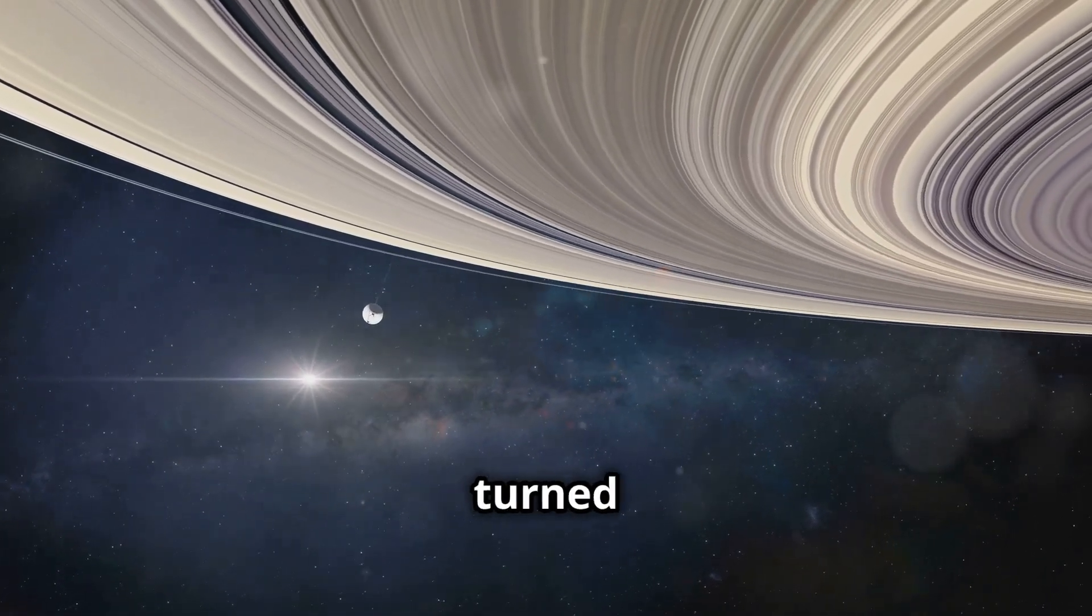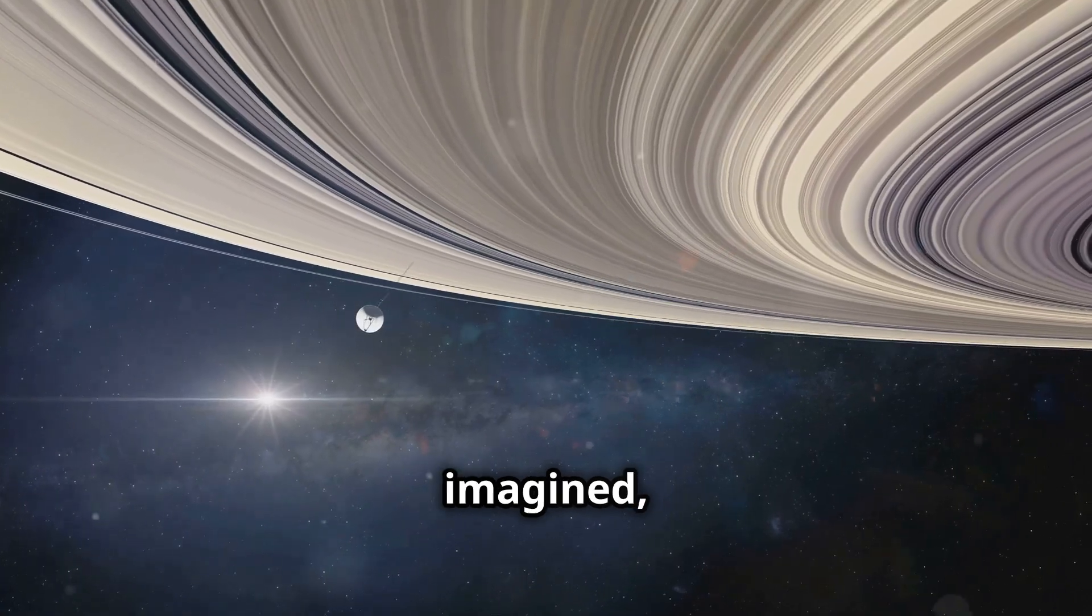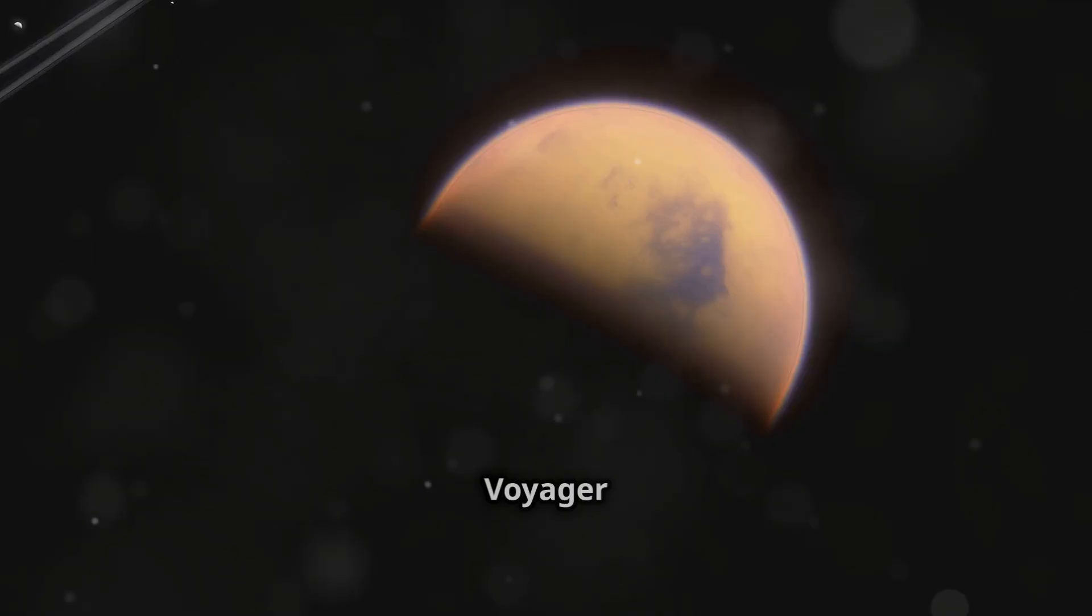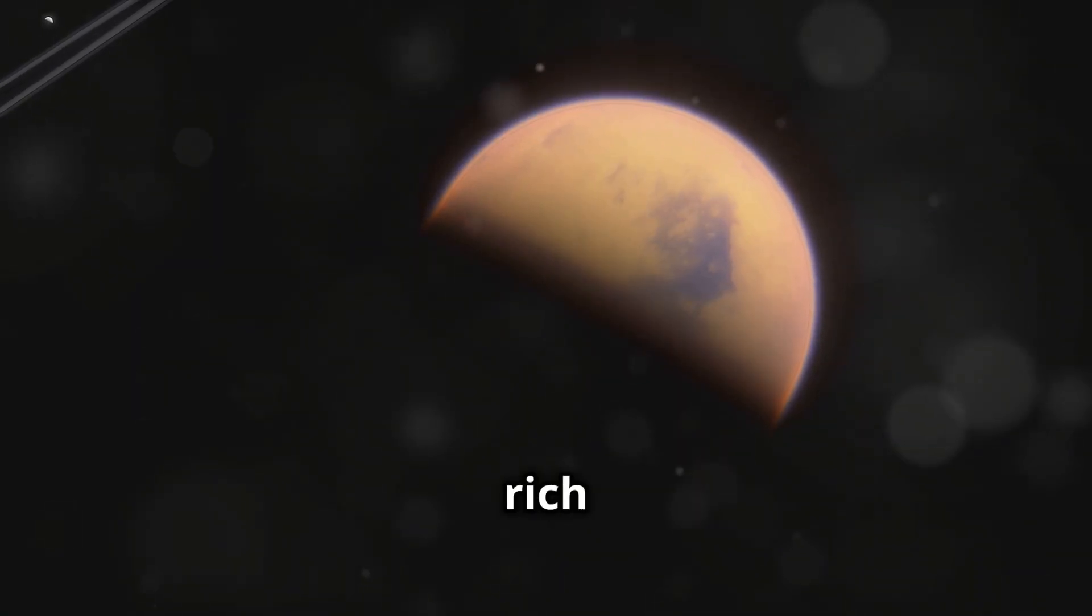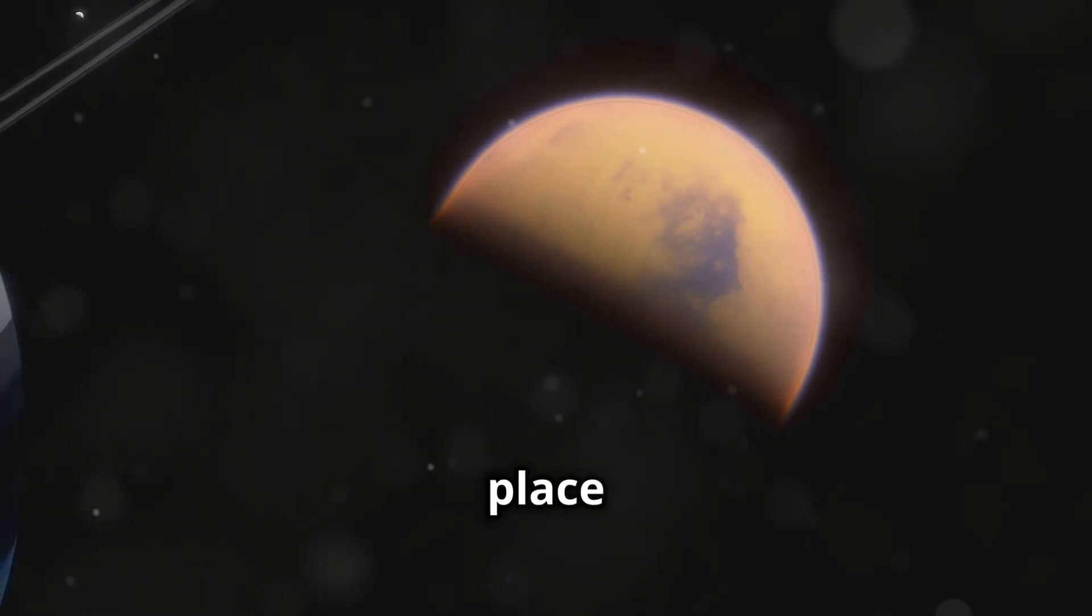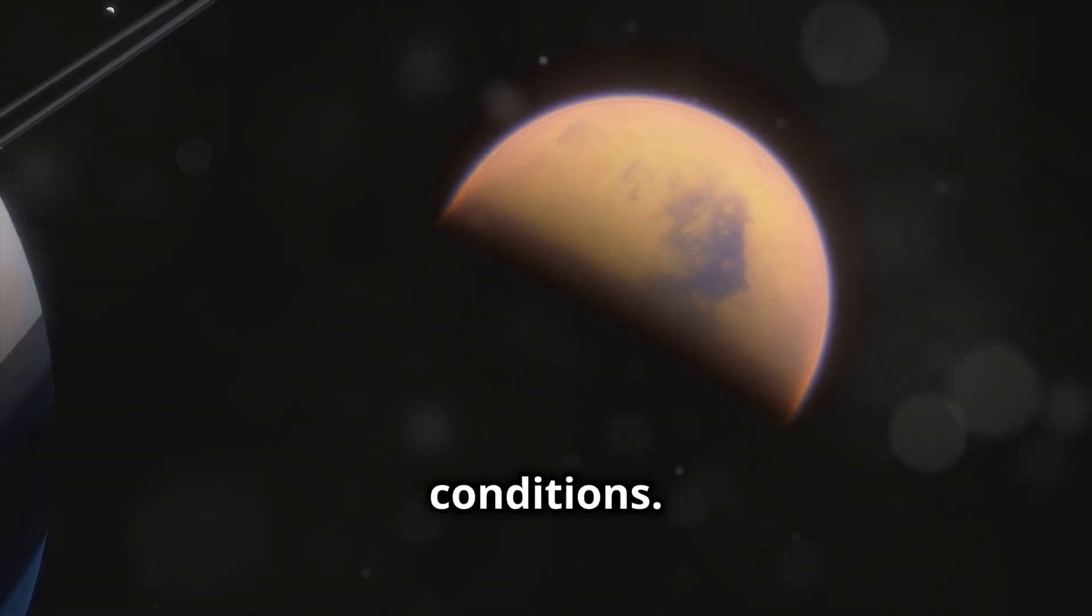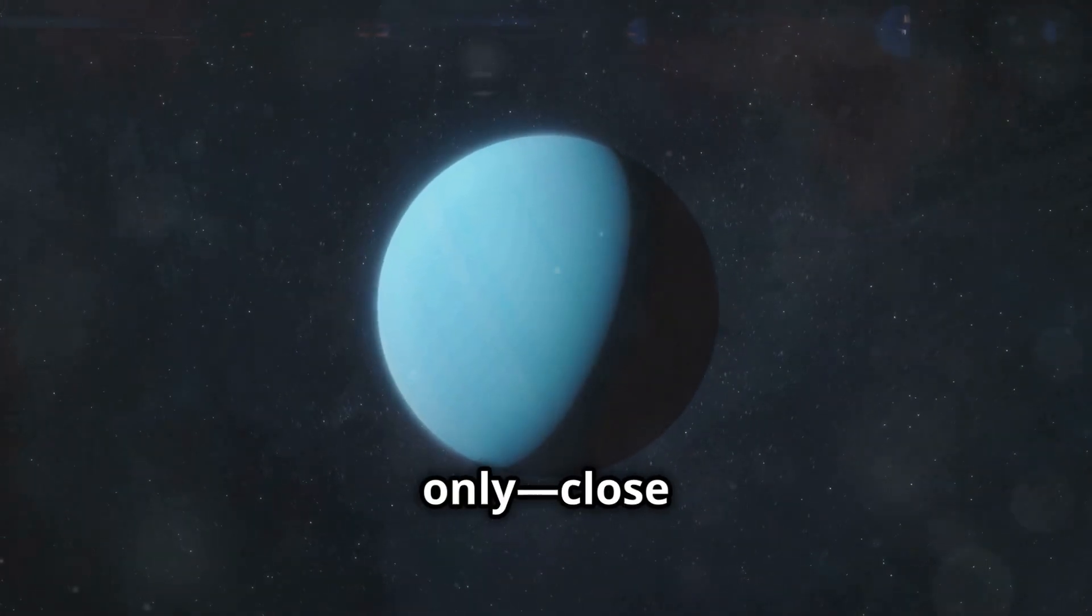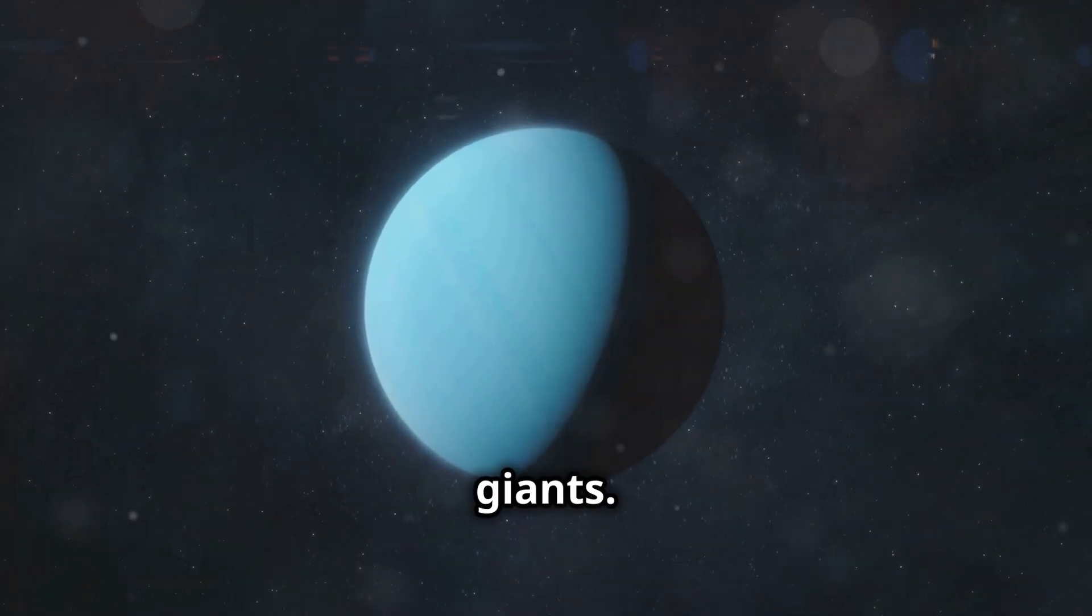Saturn's iconic rings turned out to be far more dynamic than we imagined, with intricate patterns and textures. And its moon Titan? Voyager detected a thick atmosphere rich in organic compounds, a place where life might develop under the right conditions. Voyager's flybys of Uranus and Neptune were the first, and so far only, close encounters with these ice giants.